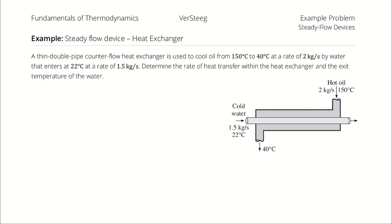A thin, double-pipe counterflow heat exchanger is used to cool oil from 150 degrees Celsius to 40 degrees Celsius at a rate of 2 kilograms per second. This cooling is done by water, which enters at 22 degrees Celsius at a rate of 1.5 kilograms per second. Determine the rate of heat transfer within the heat exchanger and the exit temperature of the water.